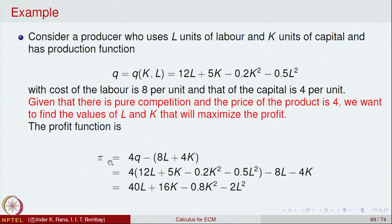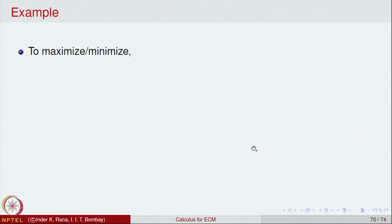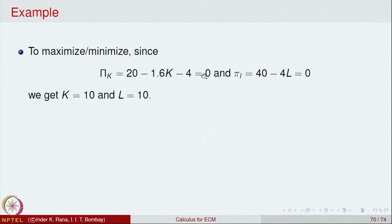We want to maximise the profit function and find the optimal input for labour, the optimal input for capital, and the resulting profit. We differentiate π with respect to K to get the partial derivative ∂π/∂K, and with respect to L to get ∂π/∂L, then set both equal to zero.